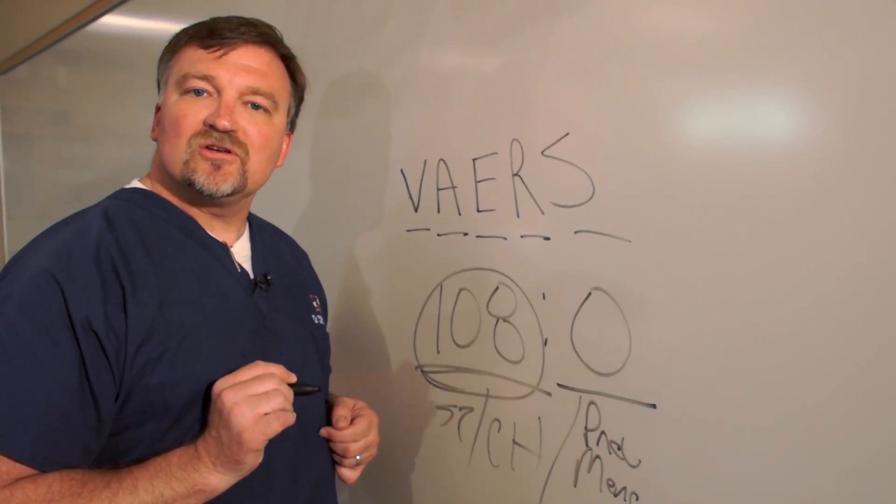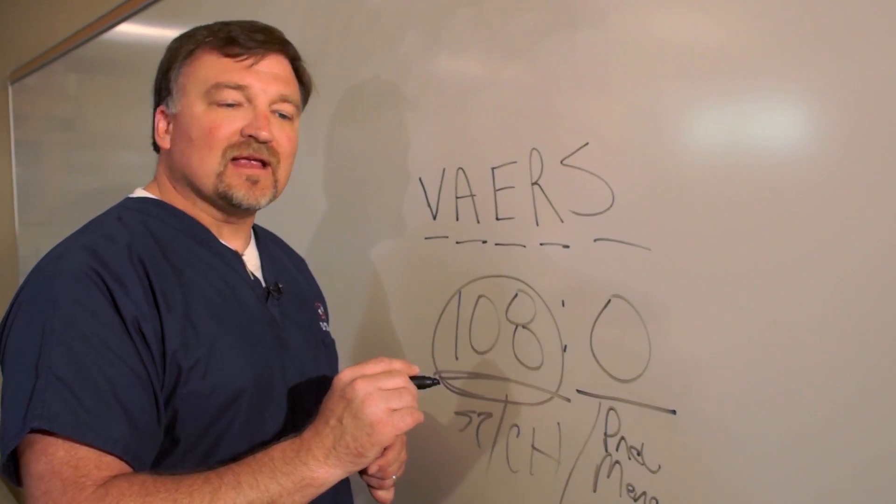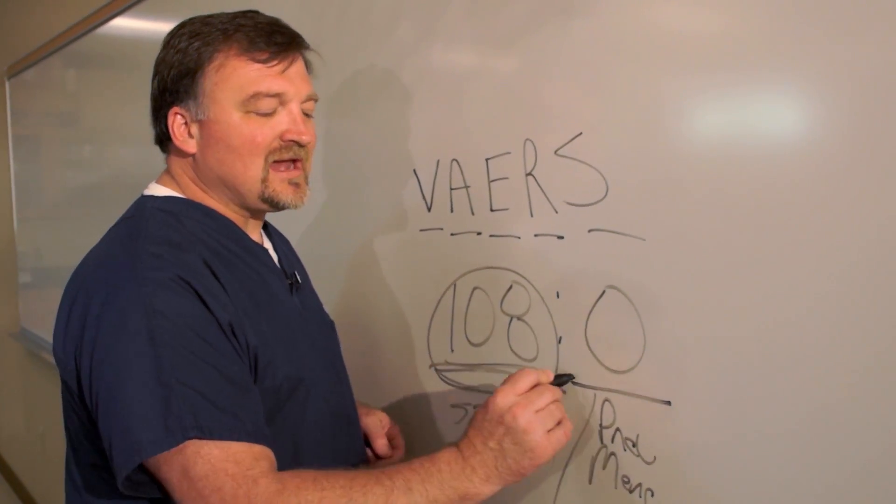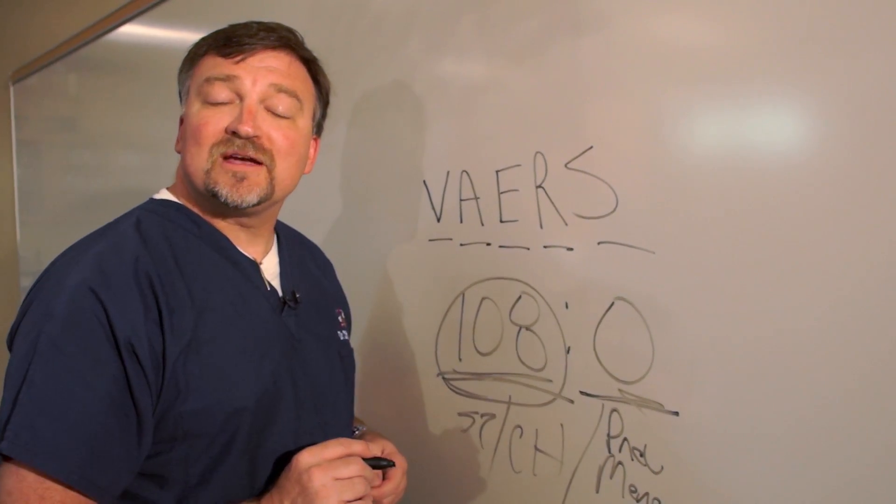So when you're looking at the VAERS system, make sure and read the whole thing. Don't just read 108 to 0, because you'll lose the whole picture.